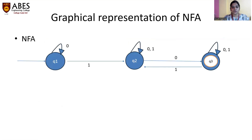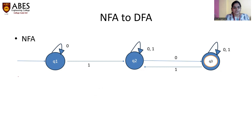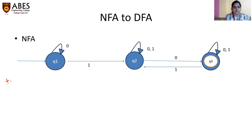Now let's move directly to the conversion process of how we can convert an NFA to a DFA. Over here we can see a non-deterministic finite automaton transition diagram. We will see step by step how we can convert this given NFA to a DFA. Our first step is to draw the transition table for the given NFA.